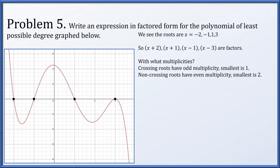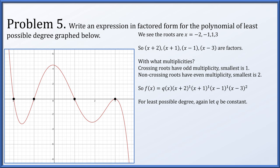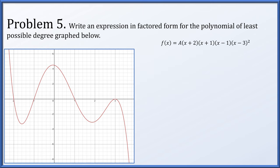Non-crossing roots have even multiplicity, and the smallest we can use is 2. The roots at negative 2, negative 1, and positive 1 are all crossing roots, so each gets exponent 1. At x = 3 the graph doesn't cross — it merely touches the axis — so it has even multiplicity, and we use multiplicity 2. So f(x) = q(x) times (x plus 2)(x plus 1)(x minus 1)(x minus 3) squared. Again assuming q is a constant, f(x) = a times (x plus 2)(x plus 1)(x minus 1)(x minus 3) squared.